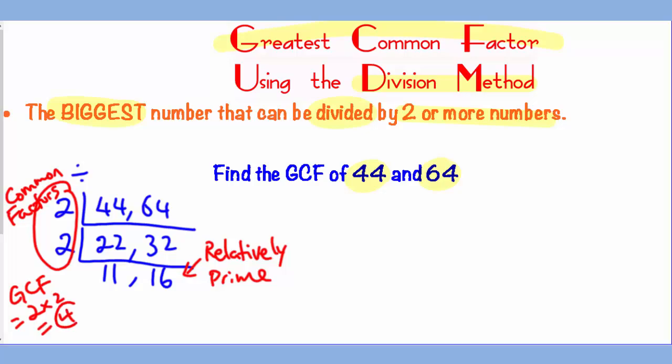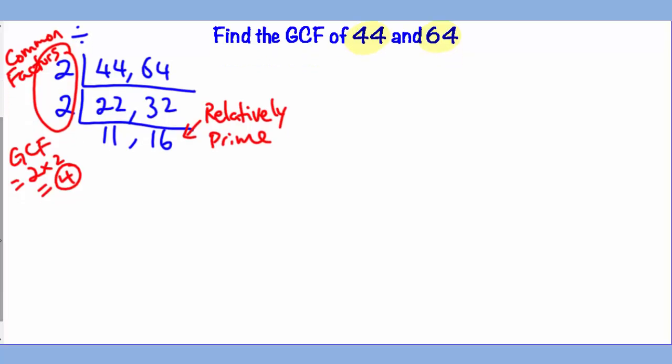Again, just like the LCM example, it does not matter how you begin the question as long as you are dividing them by a common factor. So notice how 44 and 64 can also be divided by 4 directly. So you can begin with 4 which brings 44 down to 11 and 64 down to 16 right away. And again, 16 and 11 are relatively prime, leaving you 4 as the GCF right away.